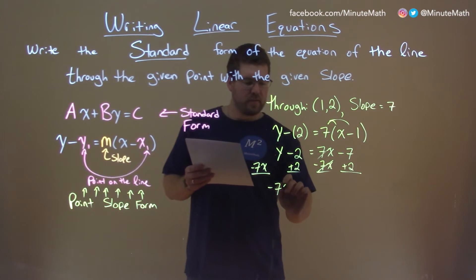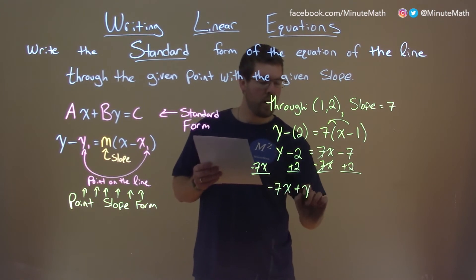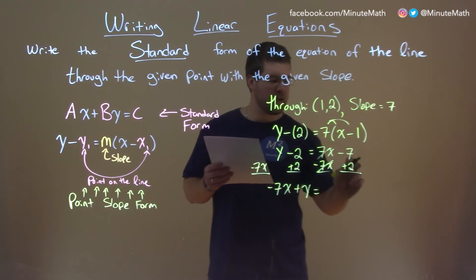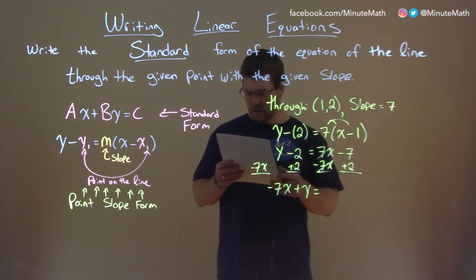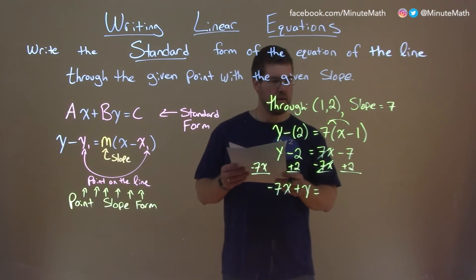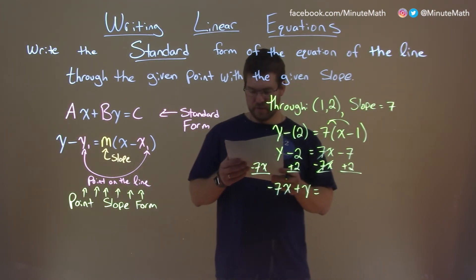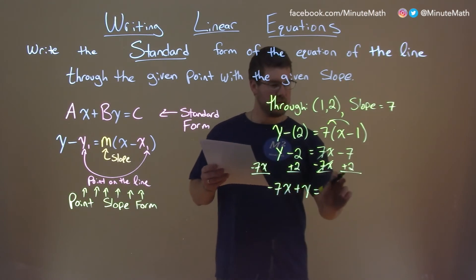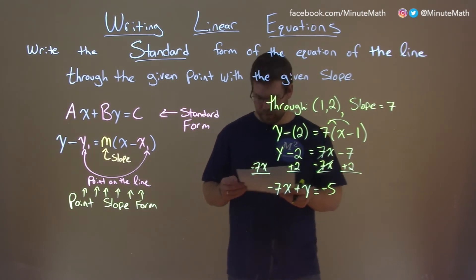We have a negative 7x here plus y equals negative 7 plus 2 as a negative 5 here.